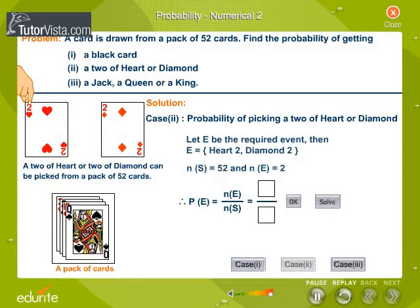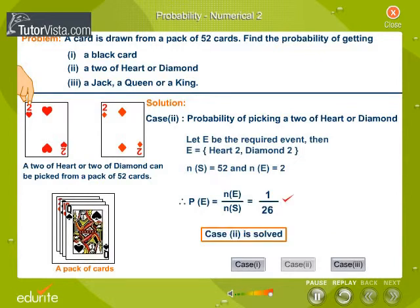We know that P(E) is equal to N(E) by N(S). Substitute the values of N(E) and N(S) and find P(E). Therefore, P(E) is equal to 1 by 26. Thus, case 2 is solved.